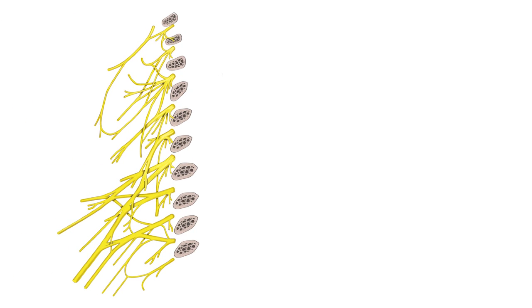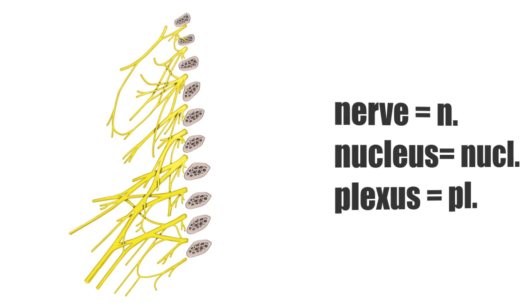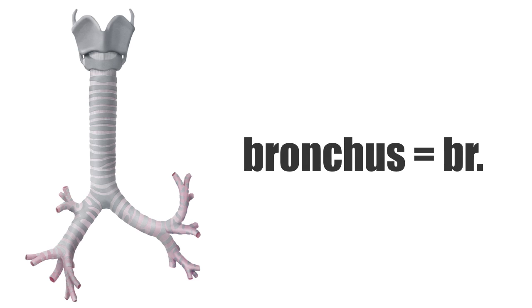The abbreviation for nerve is N, and for an aggregation of nerve cells, or nucleus, it's NUCL. For plexus, which is a weave of nerves and vessels together, the abbreviation is PL. For bronchus, the abbreviation is BR.